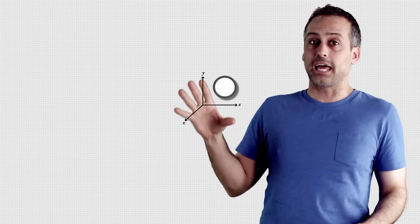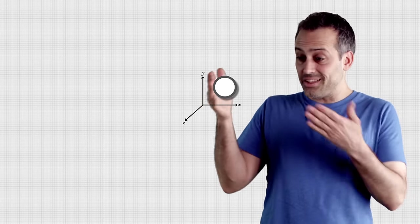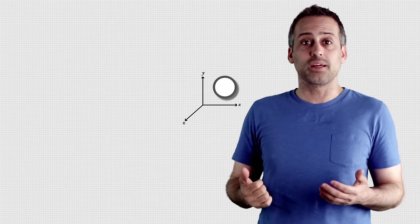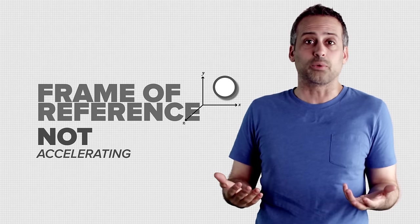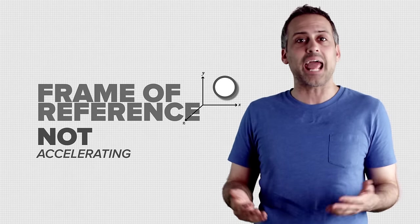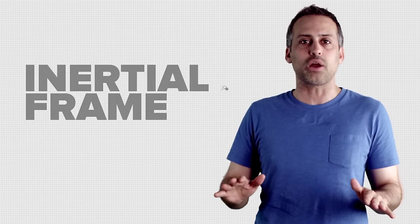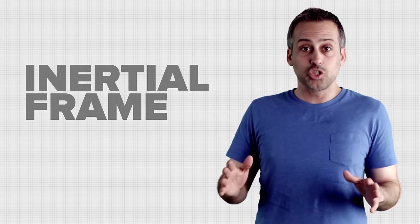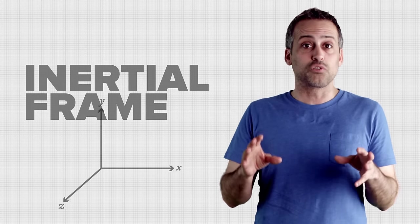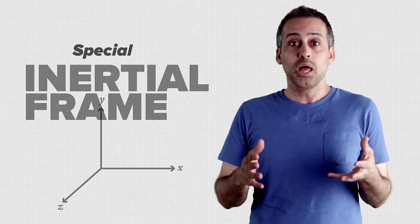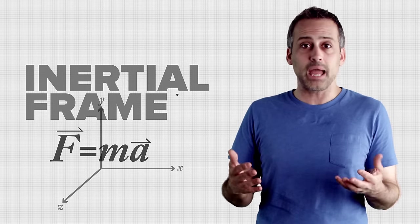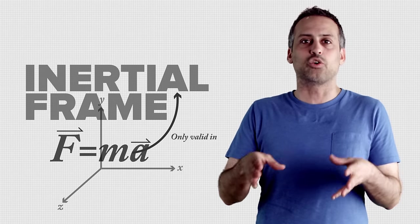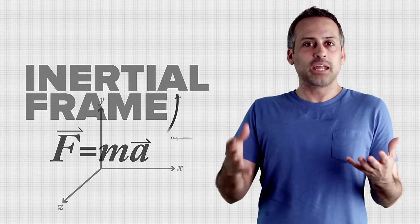Take an object with no forces on it and let go of it. If it stays right where it is, then your frame of reference is not accelerating, and we call it an inertial frame. In Newtonian physics, inertial frames are special, because Newton's second law, F equals ma, is only valid in inertial frames.